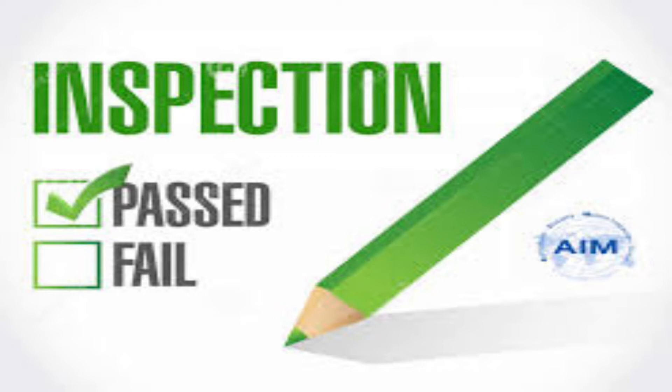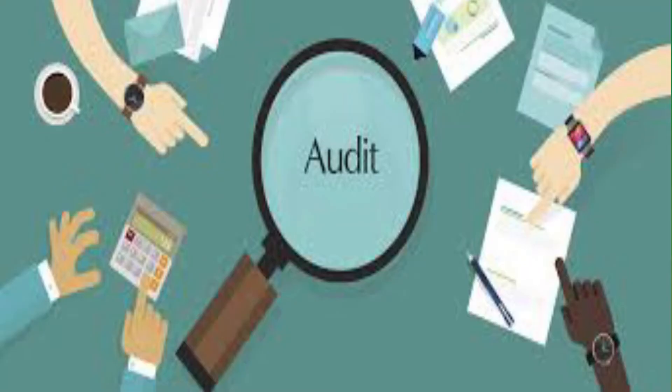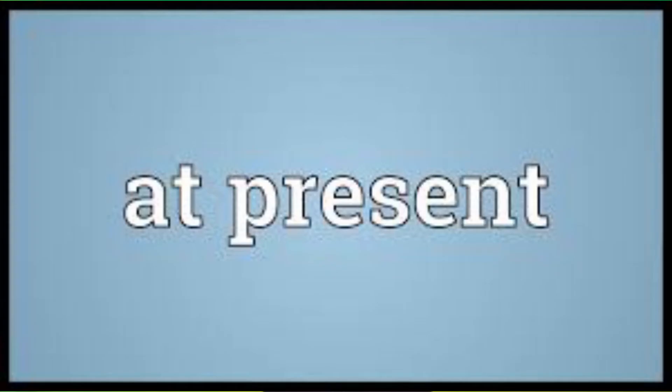In an inspection, we are just seeing that as per the checklist, whether it is fulfilling all the requirements with respect to length, diameter, color, and how it writes. Then we say either it is passed or it is not passed. But when we are doing an audit, the intent is not only to see how things are happening today, but how things have happened in the last three or six months since the last audit. In a way, audit is about the past and inspection is about the present.